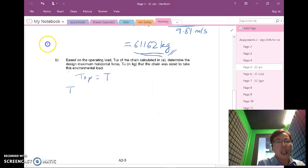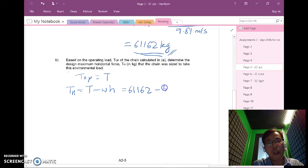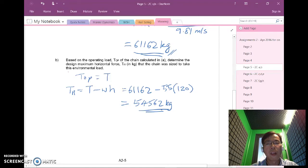Then Th would be equals to T minus Wh where W is the unit weight and h is the water depth. In this case my T as calculated above is 61162 and my W from the table is 55 kilograms and the water depth is 120 meters. That gives me 54562 kilogram. This is the design maximum horizontal force for my chain. That's the answer for part b.